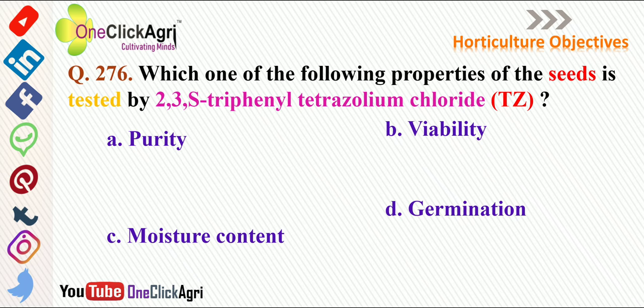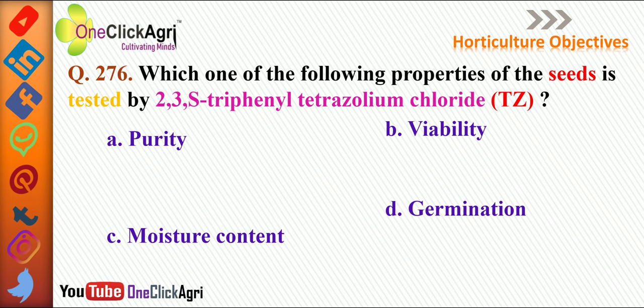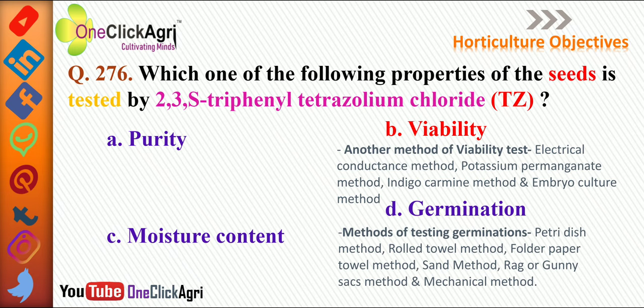Next question: Which property of seed is tested by 2,3,5-triphenyl tetrazoleum chloride (TZ test)? The right answer is viability. Other viability testing methods include electrical conductance method, potassium permanganate method, indigo carmine method, and embryo culture method. Germination testing methods include petri plate method, rolled towel method, folded paper towel method, sand method, ragor, gunny bag/gunny sacks method, and mechanical methods.